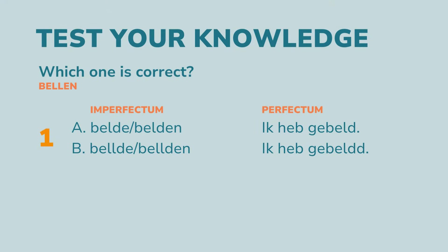I have three quiz questions for you — let me know in the comments how many you got correct. Question 1: Which one is correct for 'bellen'? A: belde, belden, and ik heb gebeld. Or B: belde, belden, and ik heb gebeld. It's A. The stem of 'bel' is with just one l — a word can never end on two consonants that are the same, so you only write one l.